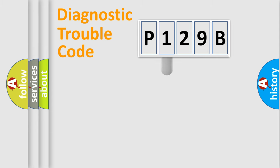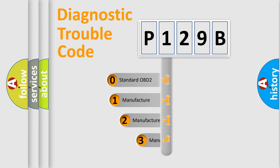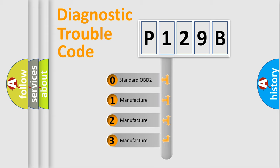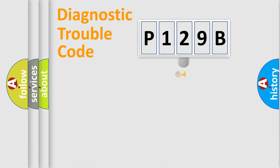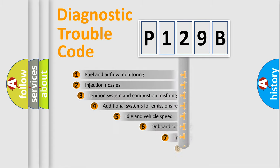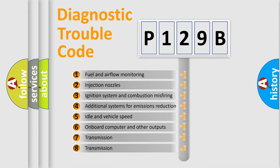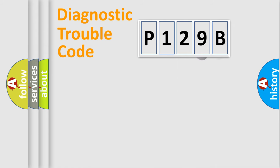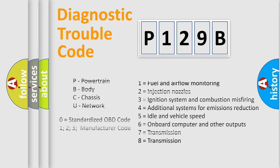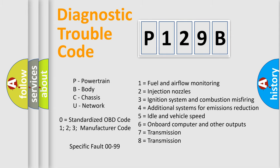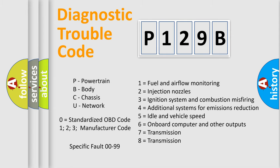This distribution is defined in the first character of the code. If the second character is expressed as zero, it is a standardized error. In the case of numbers 1, 2, or 3, it is a more manufacturer-specific expression of a car-specific error. The third character specifies a subset of errors. The distribution shown is valid only for the standardized DTC code. Only the last two characters define the specific fault of the group. This division is valid only if the second character code is expressed by the number zero.